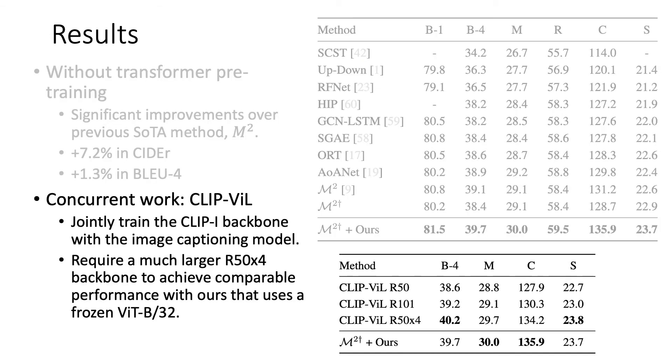The reader may be curious to ask, why don't we just jointly train the CLIP model with the image captioning model? There is a concurrent work, CLIP-ViL, that jointly trains the image branch of the CLIP model with the image captioning model. As shown in the table, their method requires a much larger ResNet-50x4 backbone to achieve comparable performance with ours. Training the image captioning model jointly with such a large backbone is computationally expensive. On the other hand, our method only uses the ViT-B/32, which is equivalent to ResNet-50 computationally, and everything is computed offline.